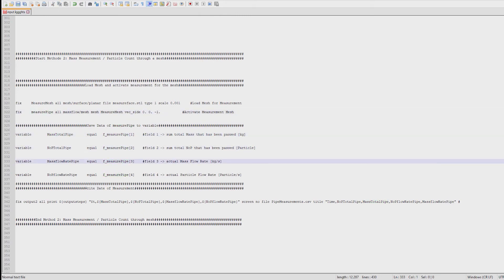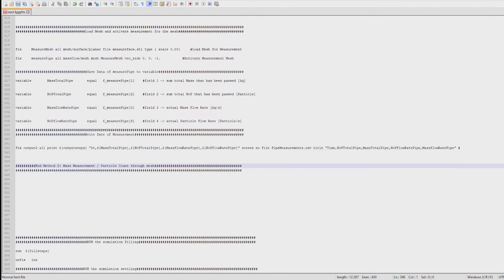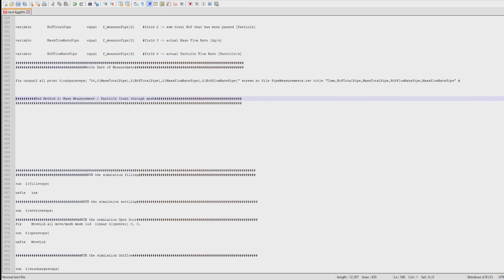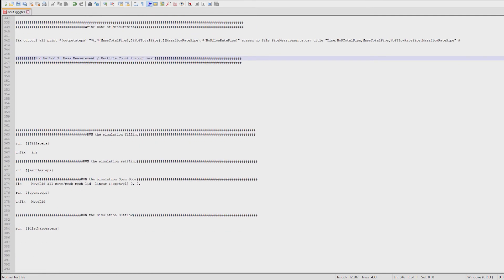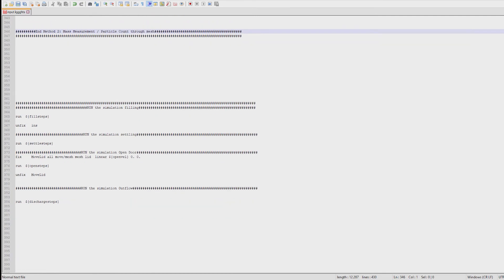The FIX output 2 will print the variable in quote marks every output steps to the file pipe measurements.csv. The title quote marks will be our headline of the CSV table. After all commands for the measurement using a mesh have been defined we add our commands for running the simulation from the first part of the tutorial.